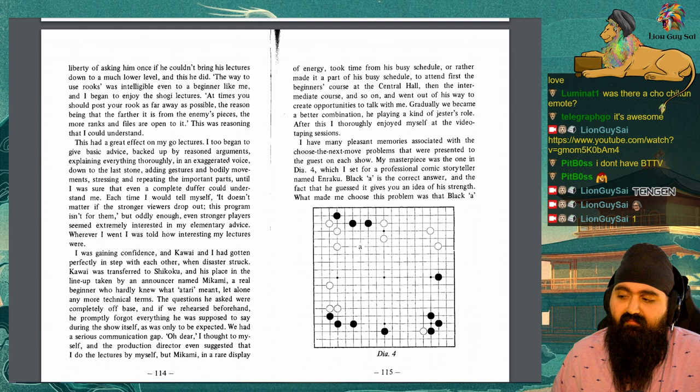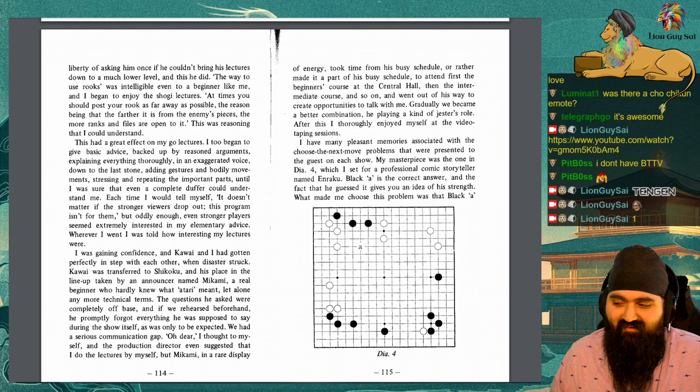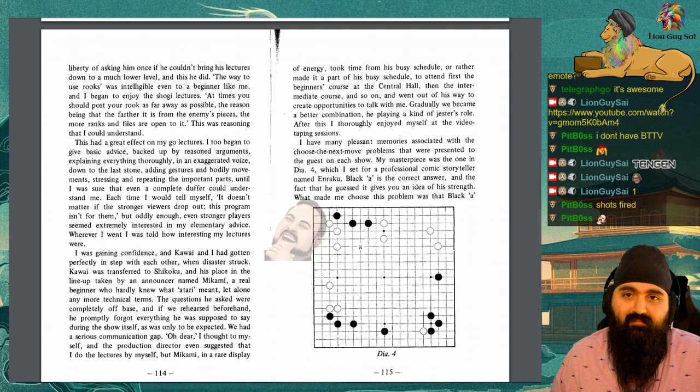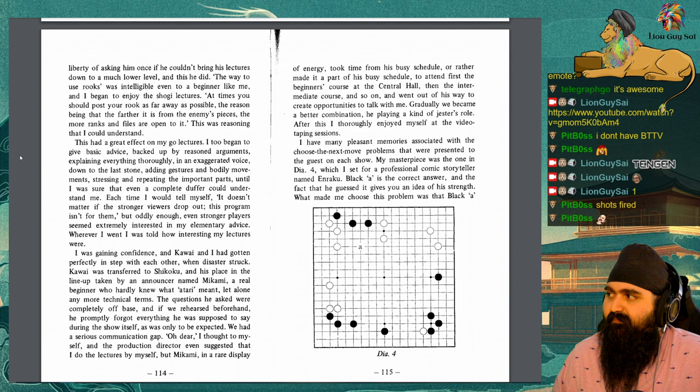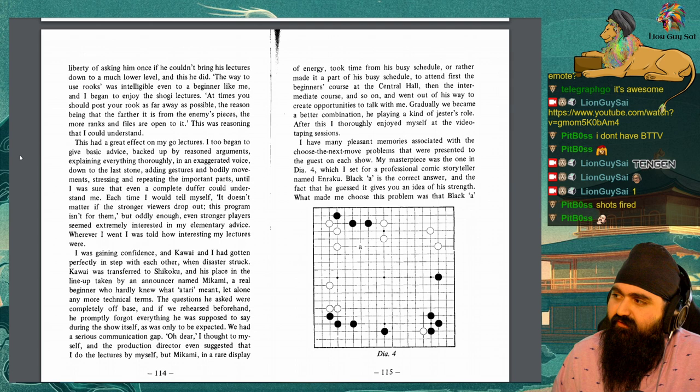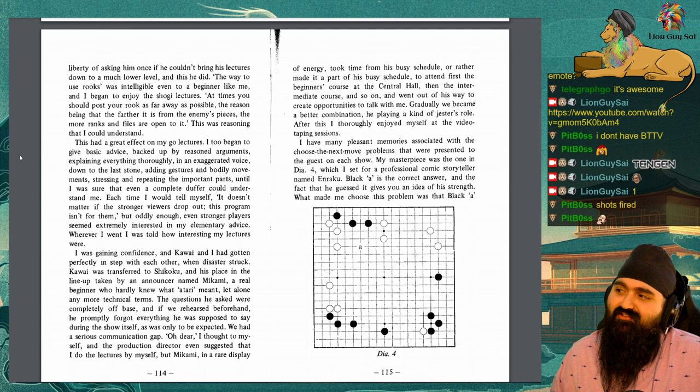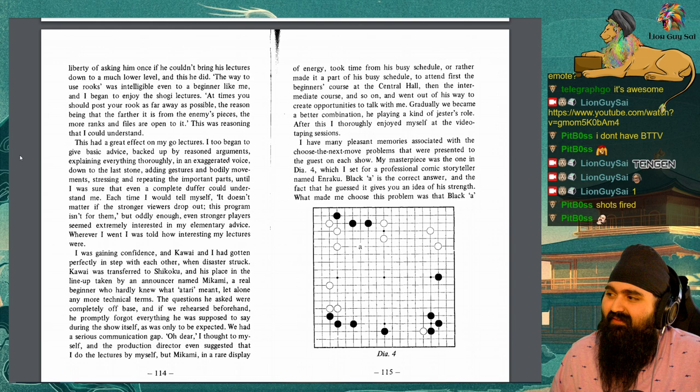Kawai was transferred to Shikoku, and his place in the lineup was taken up by an announcer named Mikami, a real beginner who hardly knew what atari meant, let alone any more technical terms. The questions he asked were completely off base, and if we rehearsed beforehand, he promptly forgot everything he was supposed to say during the show itself, as was only to be expected. We had a serious communication gap. Oh dear, I thought to myself, and the production director even suggested that I do the lectures by myself. But Mikami, in a rare display of energy, took time from his busy schedule, or rather, made it a part of his busy schedule, to attend the first beginner's course at the central hall, then the intermediate course, and so on, and went out of his way to create opportunities to talk with me. Gradually, we became a better combination. He played a kind of straight man role. After this, I thoroughly enjoyed myself in video taping sessions.